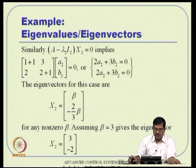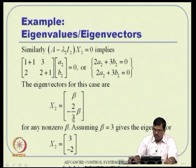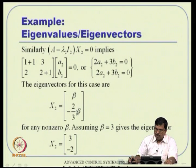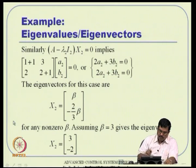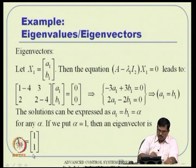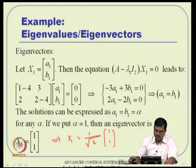For lambda_2 = 4, starting with x2 = [a2, b2] and carrying out the algebra, we end up with a relationship involving a fraction. To clear the denominator of 3, we set beta = 3, giving eigenvector x2 = [3, -2]. If we want to normalize x1, the normalized vector is (1/sqrt(2)) * [1, 1]. Similarly, normalizing x2 gives (1/sqrt(13)) * [3, -2].